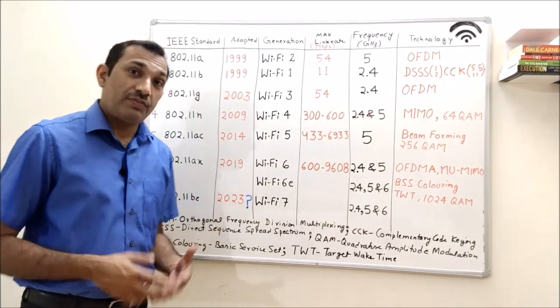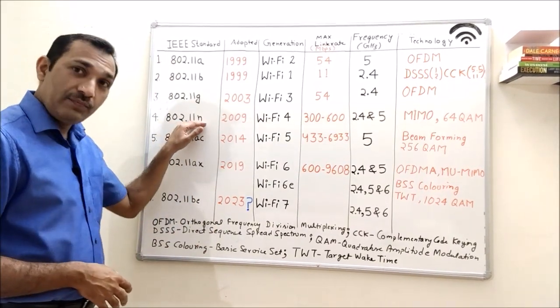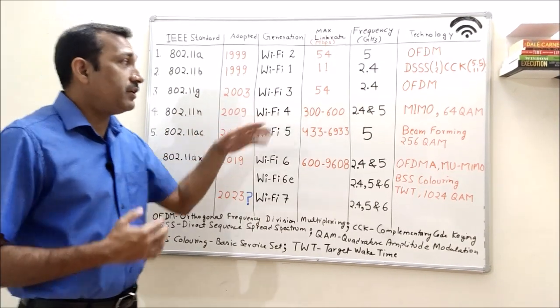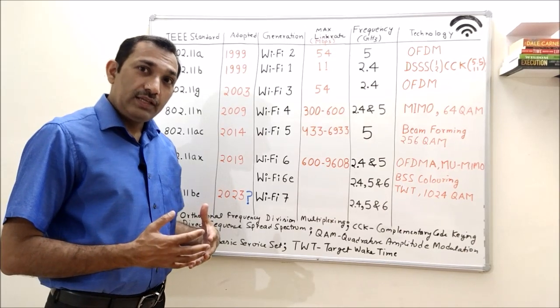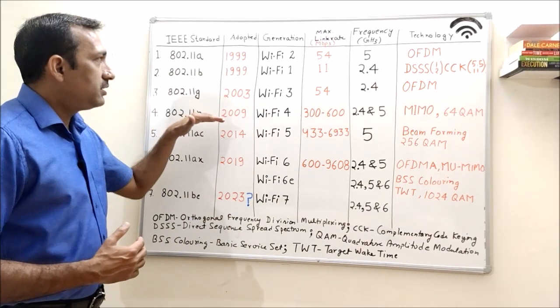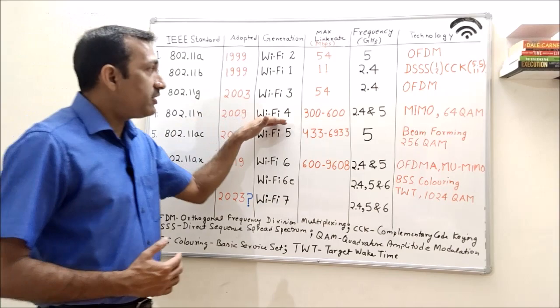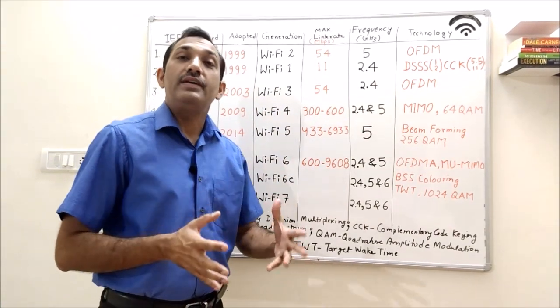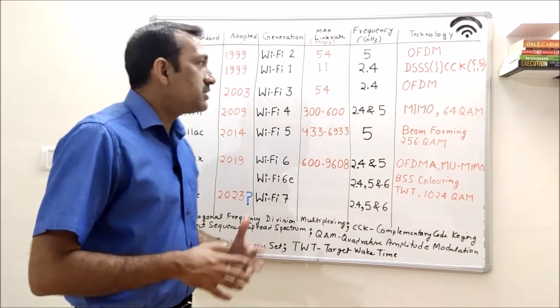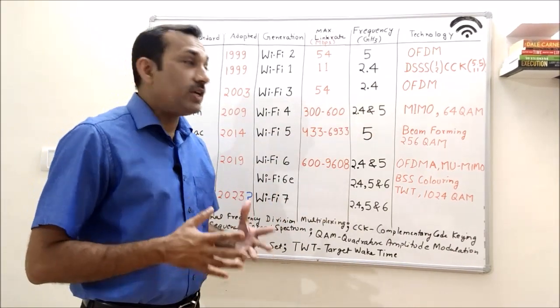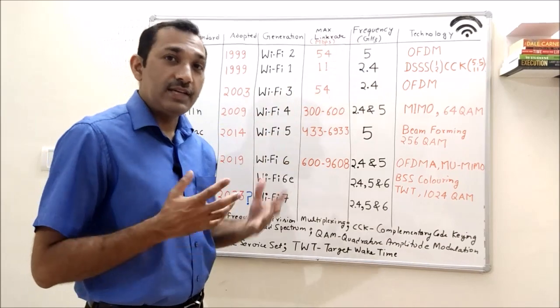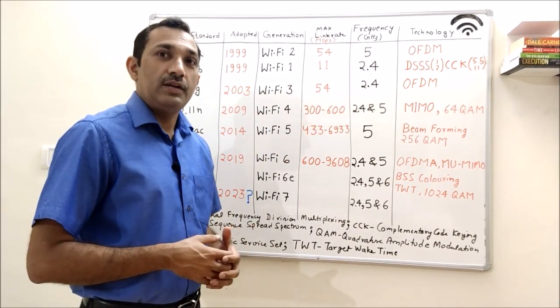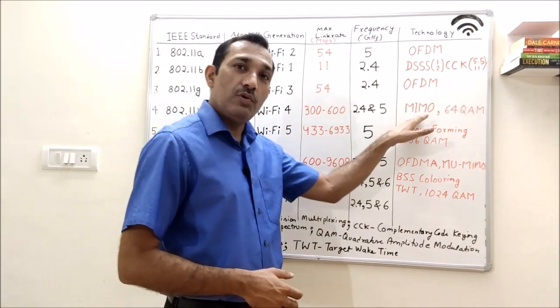Next, one of the most famous standards was 11N which came into picture in 2009 and now it is called Wi-Fi 4. This was the first standard or generation which had both 2.4 and 5 GHz bands supported. So, it was a major change from the earlier generations.